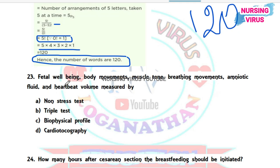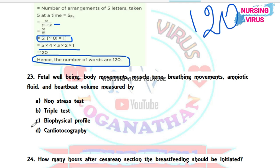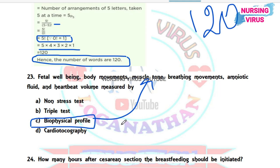Question 23: Fetal well-being parameters including body movements, muscle tone, breathing movements, amniotic fluid volume, and fetal heartbeat can be measured by which test? The options are non-stress test, triple test, biophysical profile, and cardiotocography. The correct answer is biophysical profile — only the biophysical profile assesses all of these parameters together. Cardiotocography measures only fetal heart rate.